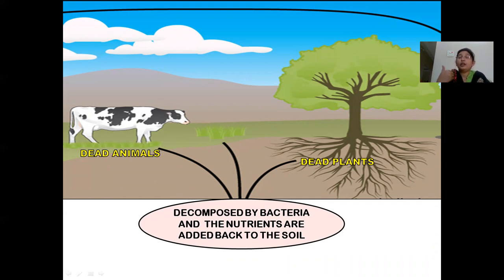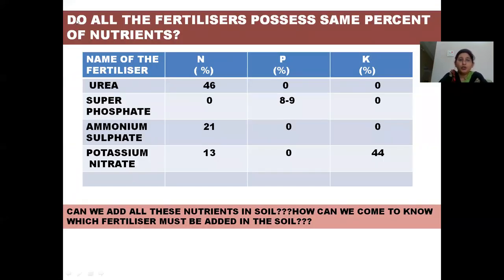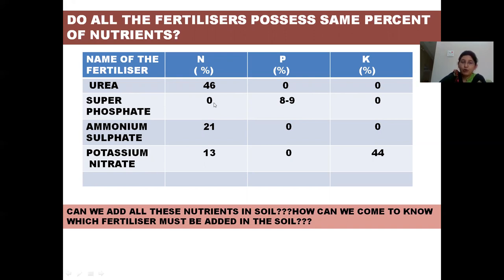These are the two ways by which the soil is replenished with nutrients. Now, do all fertilizers possess the same percentage of nutrients? A list of fertilizers is given: urea, superphosphate, ammonium sulfate, and potassium nitrate. Urea has only nitrogen — 46% nitrogen — and no phosphorus or potassium. Superphosphate has no nitrogen; as the name suggests, only phosphorus is present — 8 to 9% phosphorus — and no potassium.